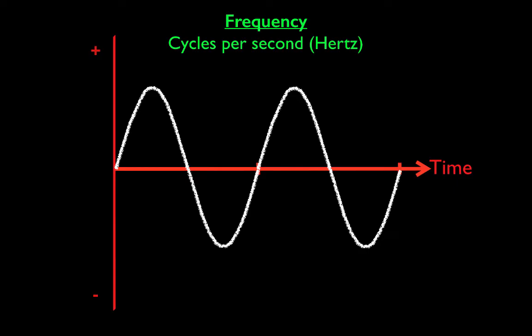Frequency refers to the number of cycles per second. Period is the length of time over which a cycle takes — so if a period is half a second, the frequency is two cycles per second. Don't get those confused, as that can be a common source of confusion.